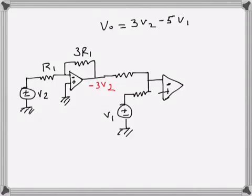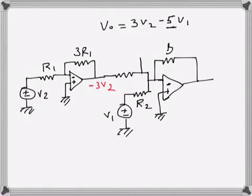This is going to the inverting input, the non-inverting input is ground again. This resistance I'll call R2, and I need to have 5V1, so this one will be 5R2.